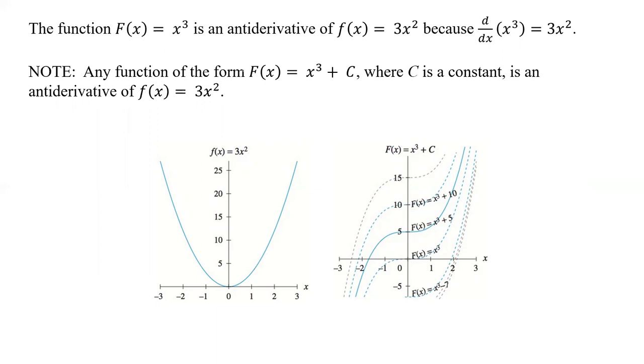So note any function in the form F(x), capital F(x), is x to the third plus C, where C is a constant, is an anti-derivative of f(x) equals 3x squared. So if we take the integral of this, we could get any one of these values. Because the C is going to be different depending on which one it is. And if we take the derivative of any one of those, guess what? We only get that one.